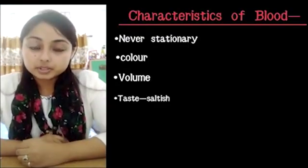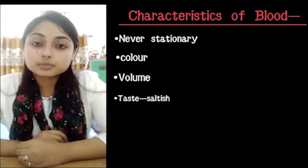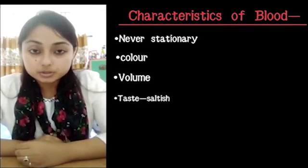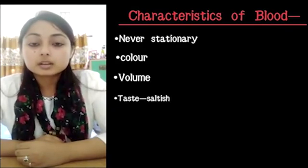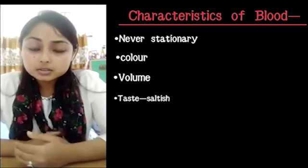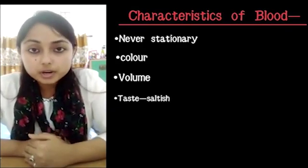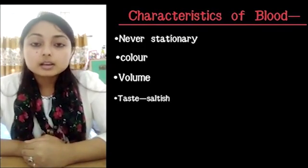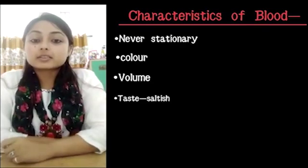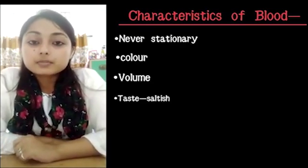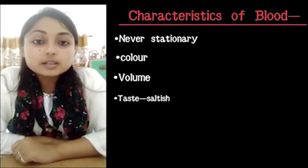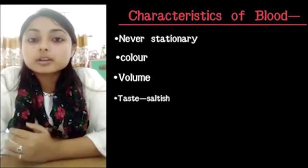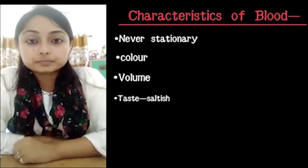There are three different types of body fluid present in us: blood, tissue fluid, and lymph. These three fluids are different from one another — they have their own characteristics. Let us check the characteristics of blood. First, blood is not a stationary fluid; it keeps on circulating in our system.